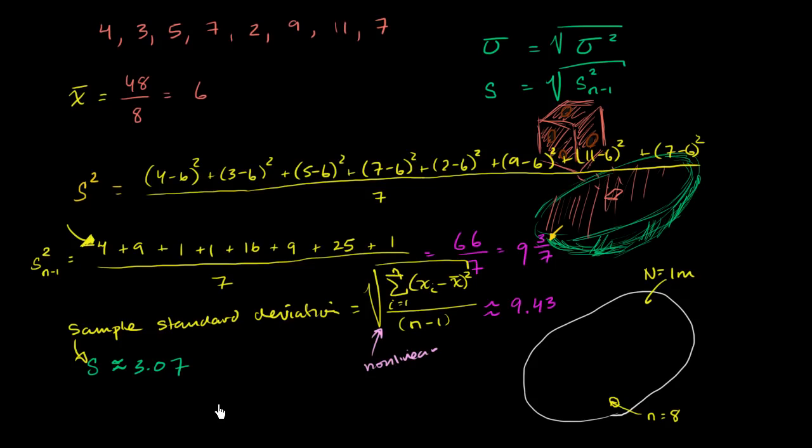And the reason why that's difficult is to unbias the sample variance, we just have to divide by n minus 1 instead of n. And that worked for any probability distribution for our population. It turns out to do the same thing for the standard deviation. It's not that easy. It's actually dependent on how that population is actually distributed.